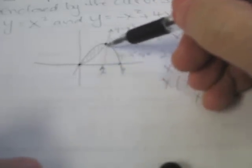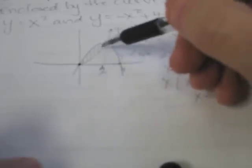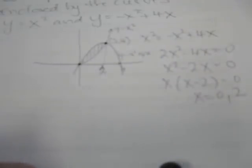Then if I find the area underneath this upper curve, which is the negative x squared plus 4x, and I subtract the area underneath the lower curve, which is x squared, and I subtract those two, then I should get the required area.